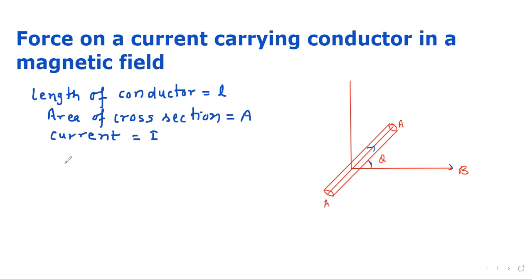Now, as we know from Lorentz force, the force on each charge will be Q V cross B, or Q V B sin theta. Here, Q is the charge of an electron.